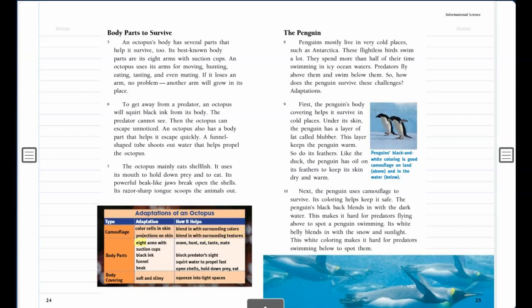Body parts: Eight arms with suction cups, black ink, funnel, beak. Move, hunt, eat, taste, mate. Block predator's sight. Squirt water to propel fast. Open shells, hold down prey, eat.